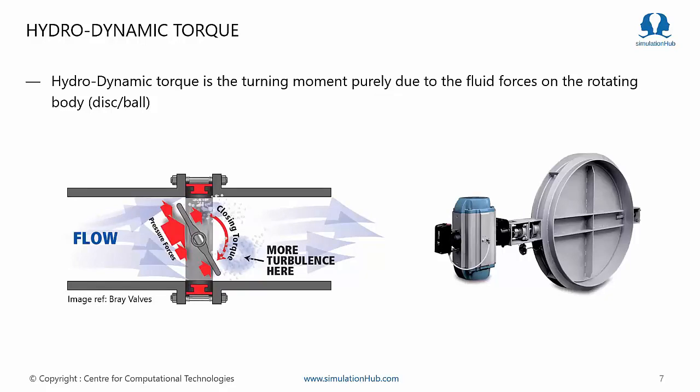Hydrodynamic torque is the turning moment purely due to fluid forces acting on the rotating body. Consider a concentric butterfly valve where the disc is partially open and flow is happening from left to right. When the fluid crosses the disc, the velocities at the leading edge and trailing edge are different, creating an unbalanced pressure force on both sides of the disc. This causes a closing torque, and that is where the actuator comes into picture.